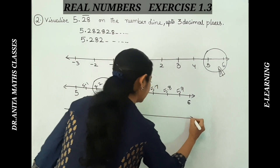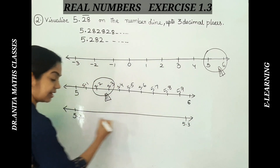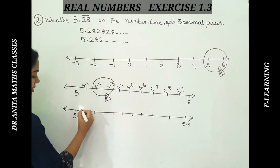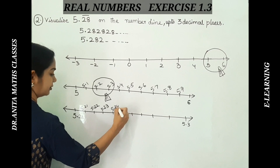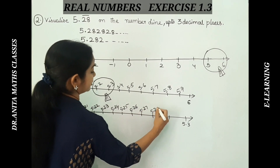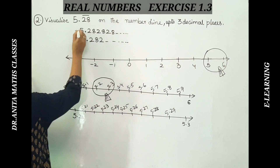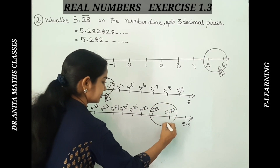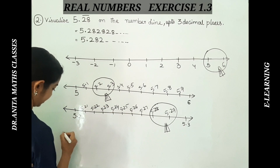This part from 5.2 to 5.3 is again divided into 10 parts on a new successive number line: 5.21, 5.22, 5.23, 5.24, 5.25, 5.26, 5.27, 5.28, 5.29, and 5.3. Our number has second decimal digit 8, so it lies at 5.28. I place the magnifying glass between 5.28 and 5.29 for the final magnification.